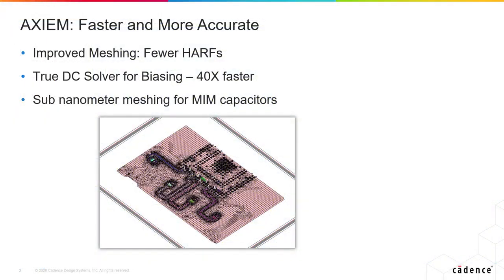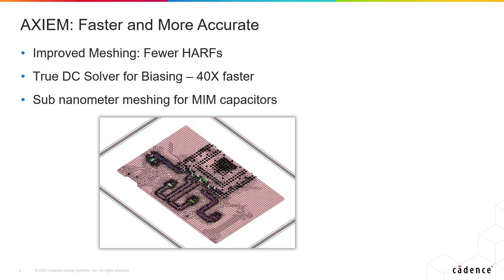Let me also come back to this DC solver. Harmonic balance simulations need a DC bias point in the S-parameters if you put them in there, especially for power amplifier designers. In the new version of Axiom V15, there is a much faster DC solver. It essentially just solves for the DC currents and is up to 40x faster. So power amplifier designers will love it because they can run sweeps and things much faster with that solver.